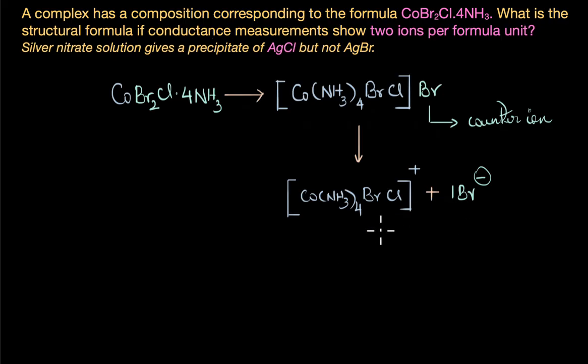We would get a cationic complex, 1 cation that is [Co(NH₃)₄BrCl]⁺ with a positive charge and 1 bromide ion. So we have a total of 2 ions forming here, which is consistent with the information given in the question. Based on the conductance measurement we do indeed get 2 ions per formula unit if we had this as a structural formula. So is this it? Did we get the correct answer?